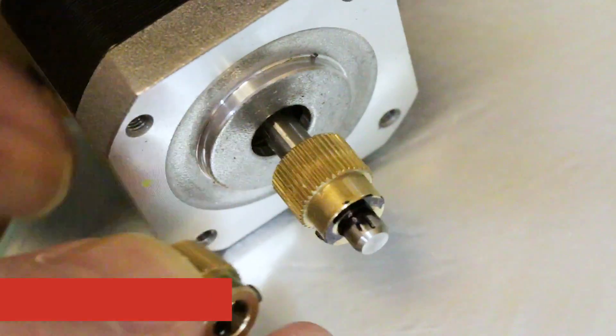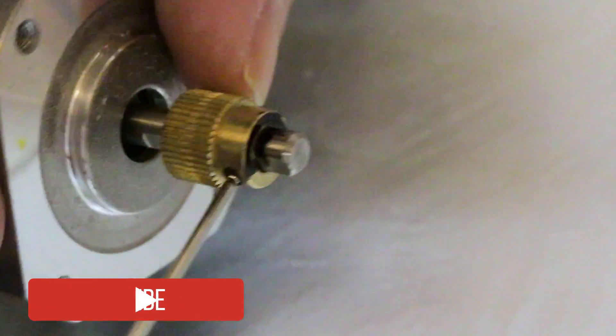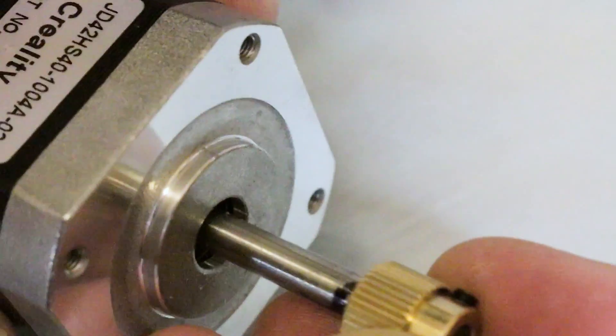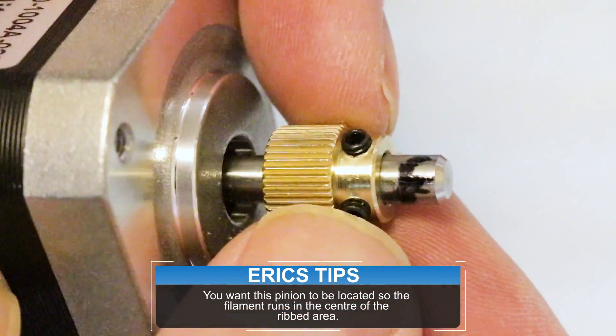I mark the shaft with a sharpie so I know where the collet needs to sit so our new drive goes back into the same position on the shaft it was before. Remove the set screws, slip the new one on, and tighten the set screws down.